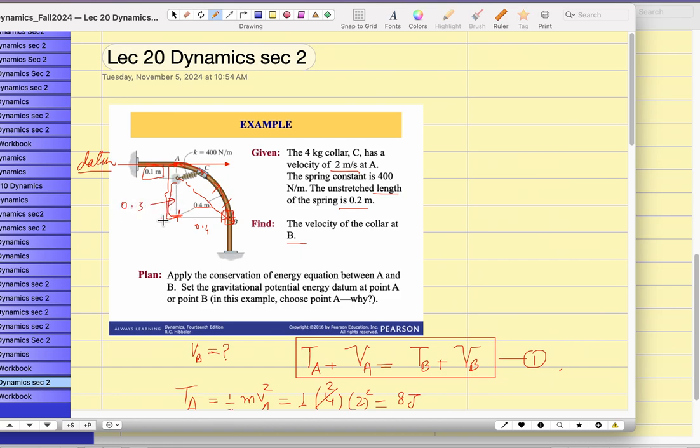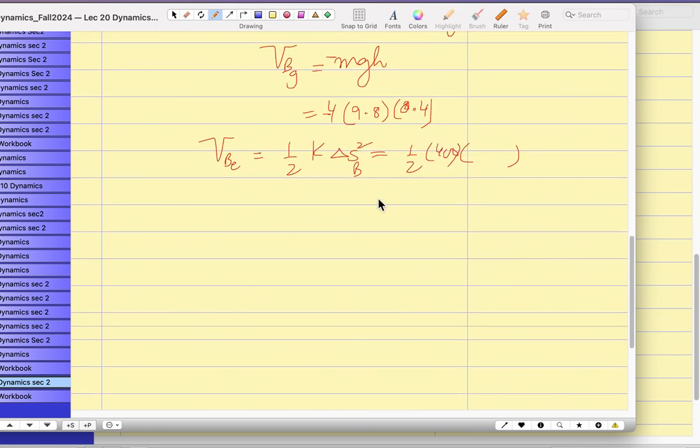So it is 3, 4, 5 triangle. So when it's 3, 4, so it is 0.5. The whole length of the spring, it is 0.5 at location B. What is the net deflection? The net deflection is 0.5 minus 0.2, which is unstretched length. So if you solve for this, you should get, so let me write down the complete V sub B into 2.32 joules.